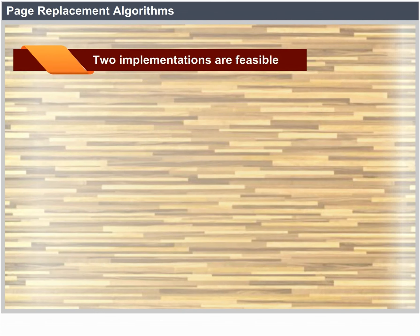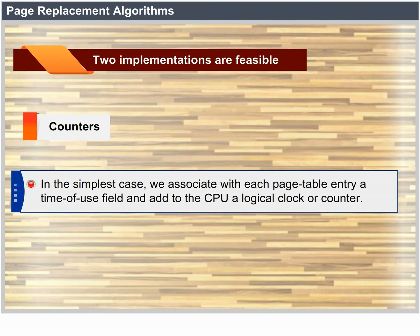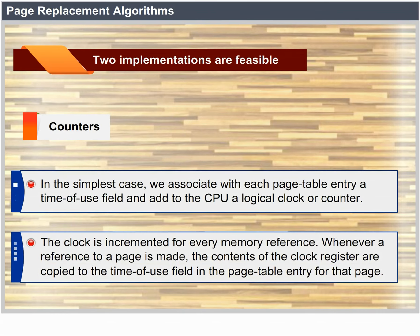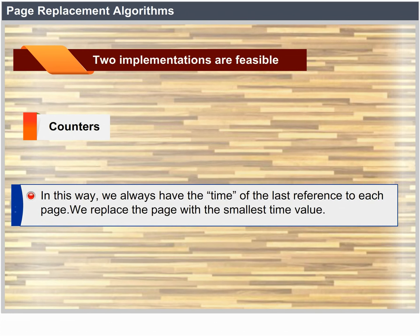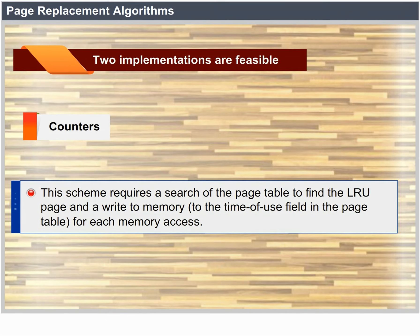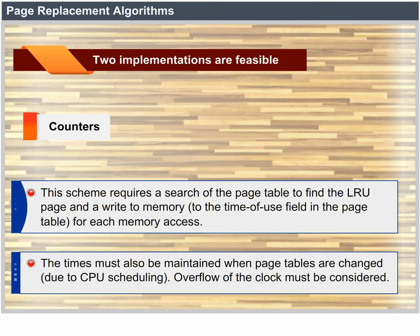Two implementations of LRU are feasible. Counters: we associate with each page table entry a time-of-use field and add to the CPU a logical clock or counter. The clock is incremented for every memory reference. Whenever a reference to a page is made, the contents of the clock register are copied to the time-of-use field in the page table entry for that page. We replace the page with the smallest time value. This scheme requires a search of the page table to find the LRU page and a write to memory for each memory access. Overflow of the clock must also be considered.